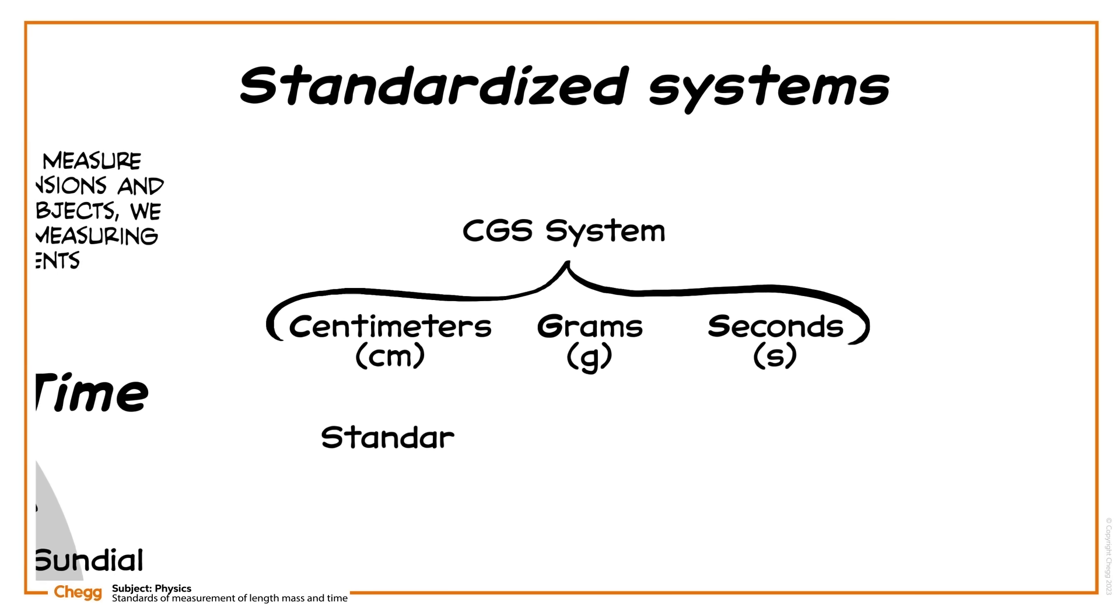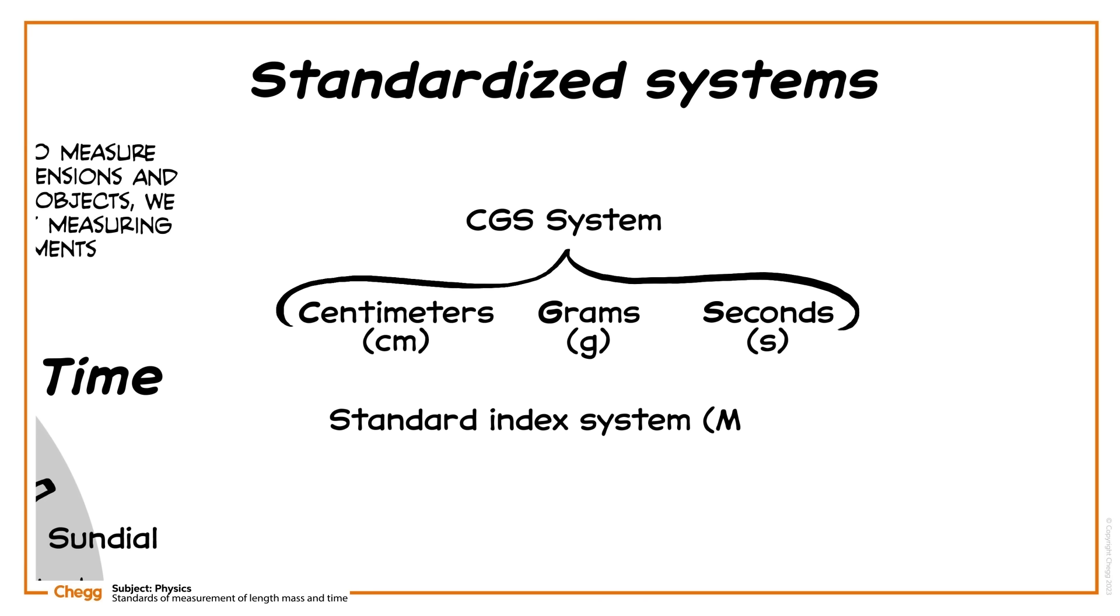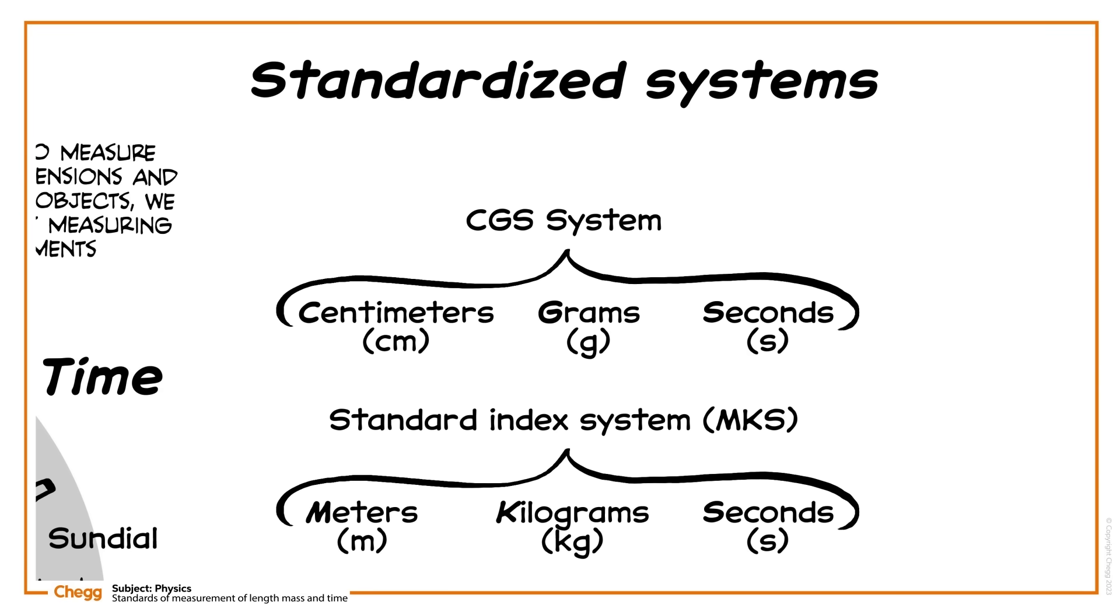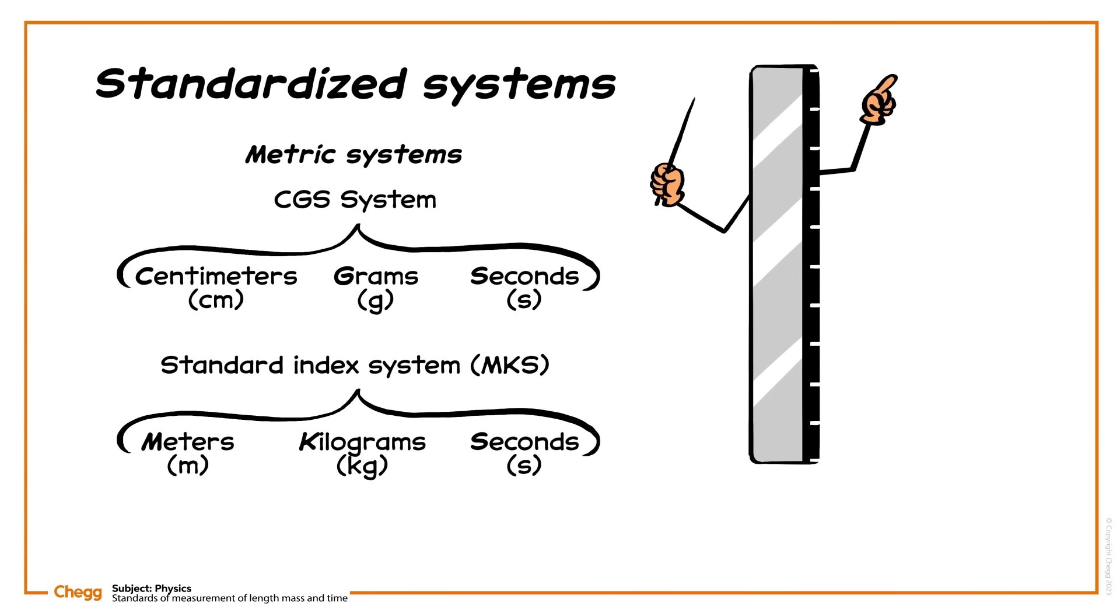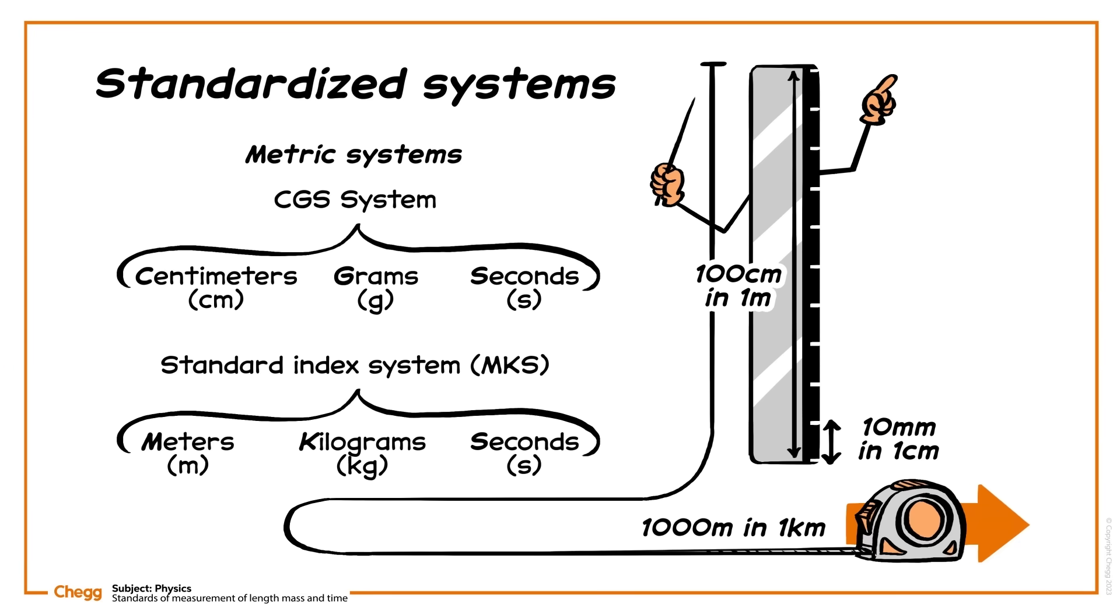The standard index system, MKS, uses meters, kilograms, and seconds. These two are usually known as metric measurements, meaning that they measure in meters. The metric system has been adopted in most engineering and scientific fields around the world because of its simplicity. To go up in orders, you either multiply by 10 or divide by 10. So there are 10 millimeters in a centimeter, 100 centimeters in a meter, and 1,000 meters in a kilometer.